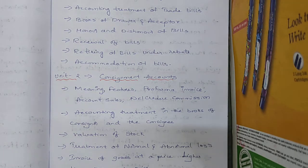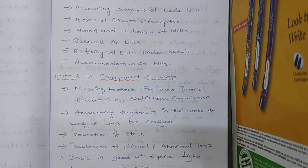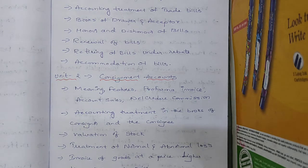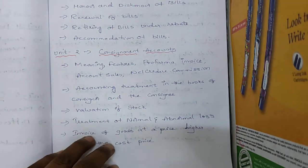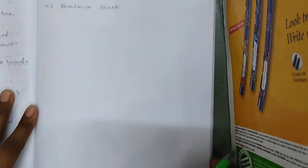Continuing with Consignment Accounts: topics include features, pro forma invoice, account sales, del credere commission, accounting treatment — that is problems related to consigner and consignee — stock valuation, normal loss and abnormal loss calculation, and invoice sums. These are all the topics under Unit 2.